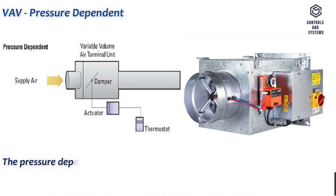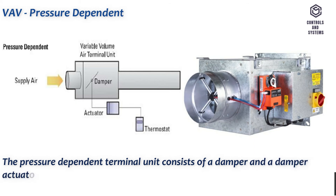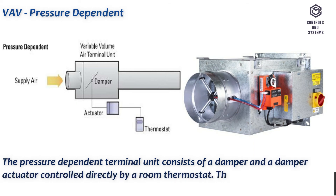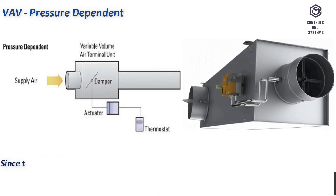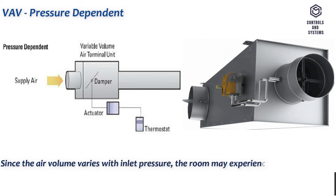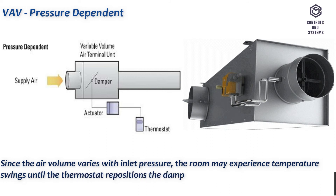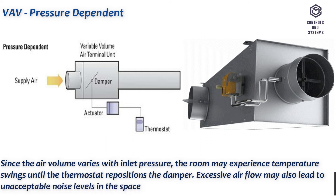The pressure dependent terminal unit consists of a damper and a damper actuator controlled directly by a room thermostat. The damper is modulated in response to room temperature only. Since the air volume varies with inlet pressure, the room may experience temperature swings until the thermostat repositions the damper. Excessive airflow may also lead to unacceptable noise levels in the space.